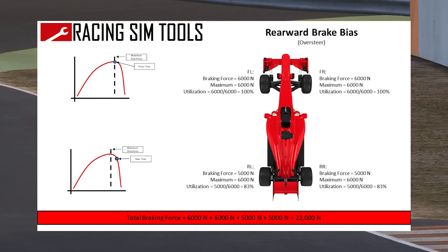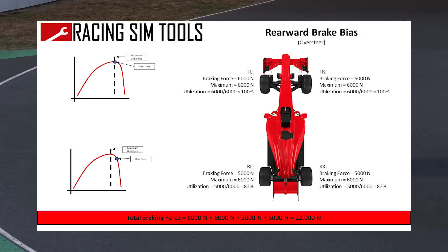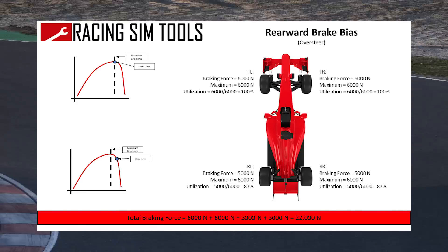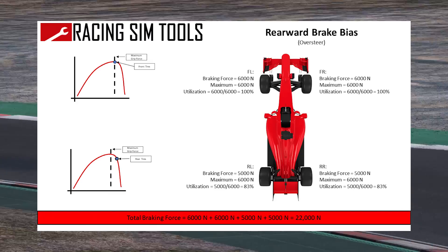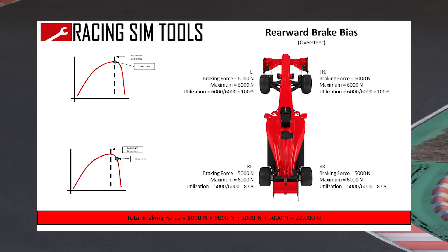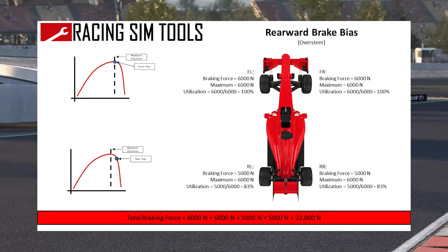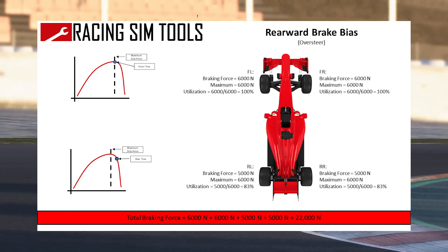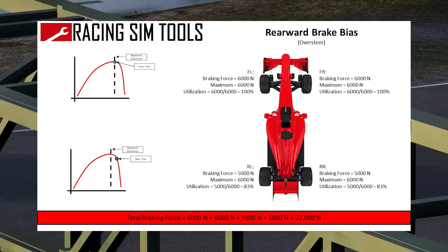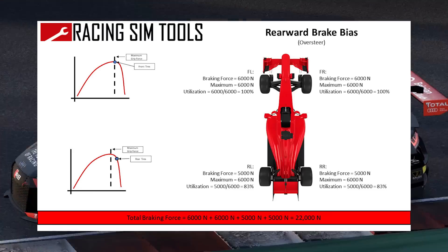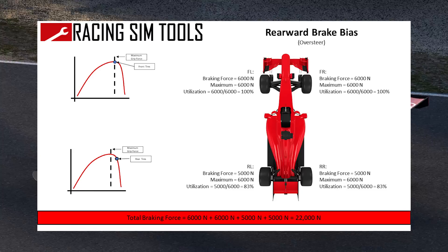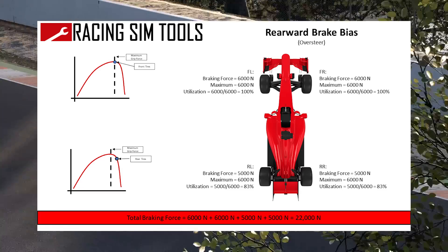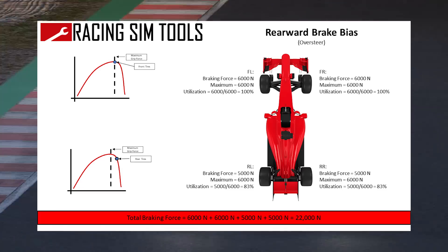Meanwhile, the front is still at 100%. Again, we're at less than the total brake force of 24,000 newtons — we're at 22,000 newtons with the rearward brake bias. In addition, because we're locking up the rears and we have less grip on the rears, we're going to have a little bit of oversteer. So having the brake bias a little too far back is really unstable for the car. You're going to always have a little bit of turn-in oversteer until you get off those brakes.